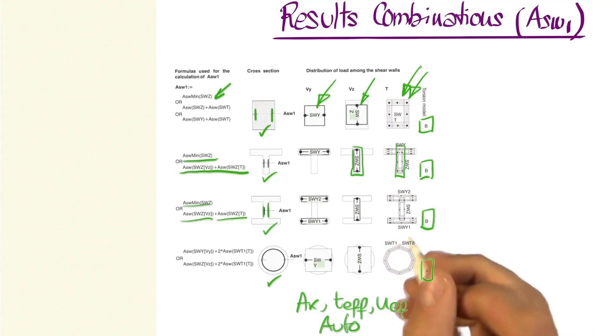and to do so, our stirrup will be, according to the formula, the one that corresponds to the shear wall for shear force in Y, plus two times the corresponding torsion. And the same for Z.